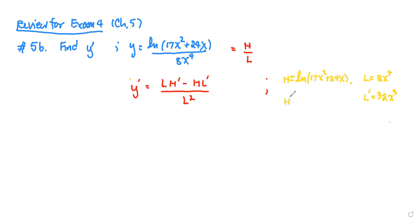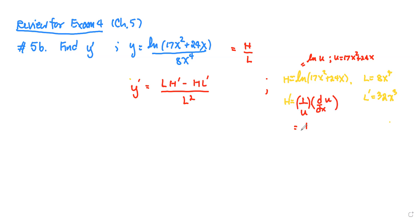For the high, we find the derivative of the natural log of 17x squared plus 24x using the chain rule. This is the natural log of quantity u, where u is 17x squared plus 24x, so the derivative is 1 over u multiplied by u'. That gives 1 over (17x squared plus 24x), multiplied by u' which is 34x plus 24.